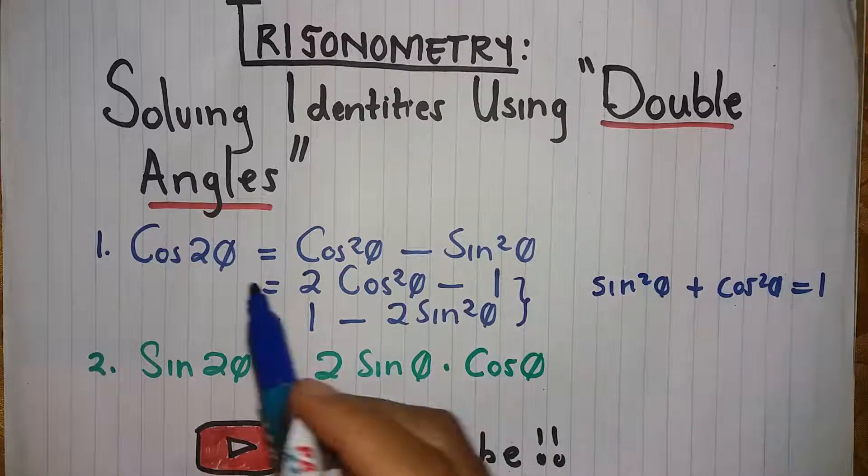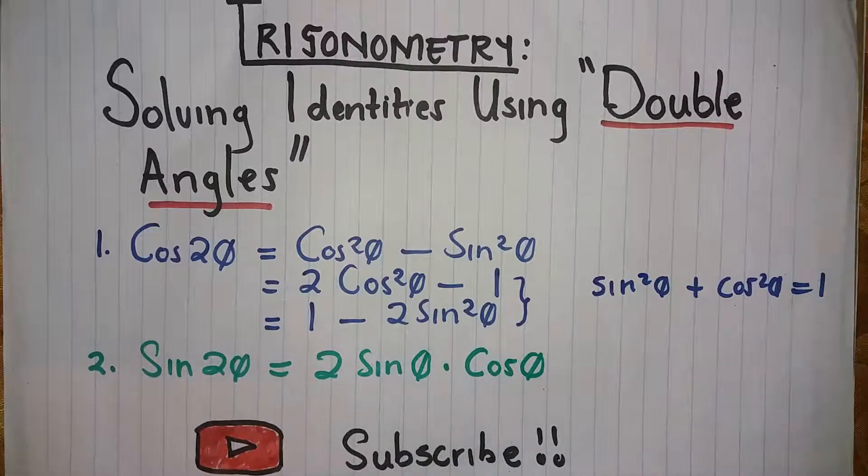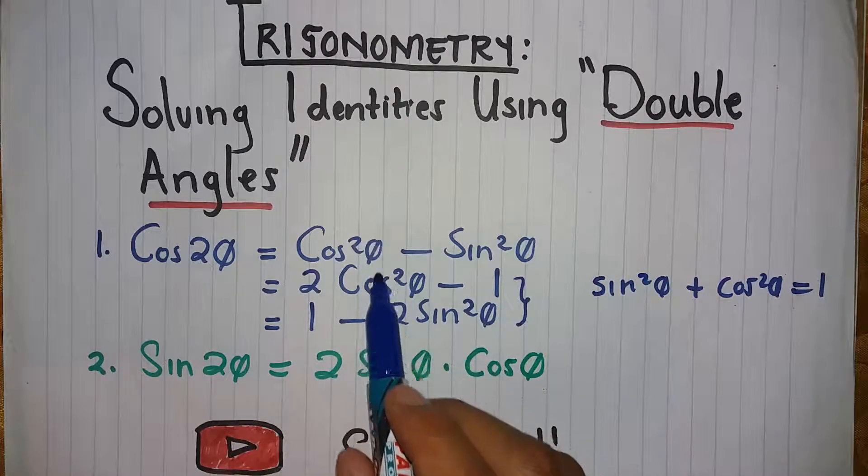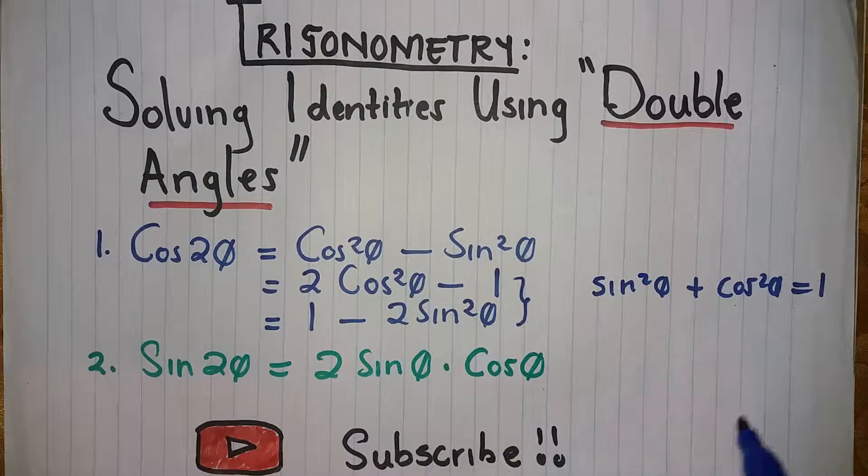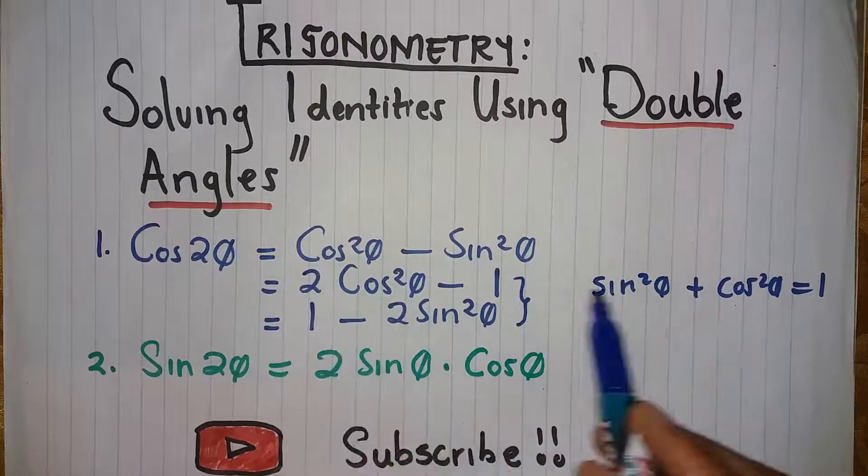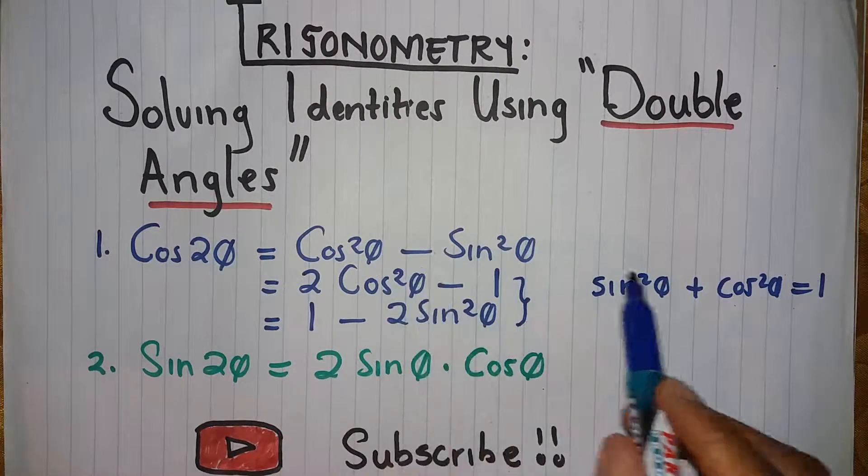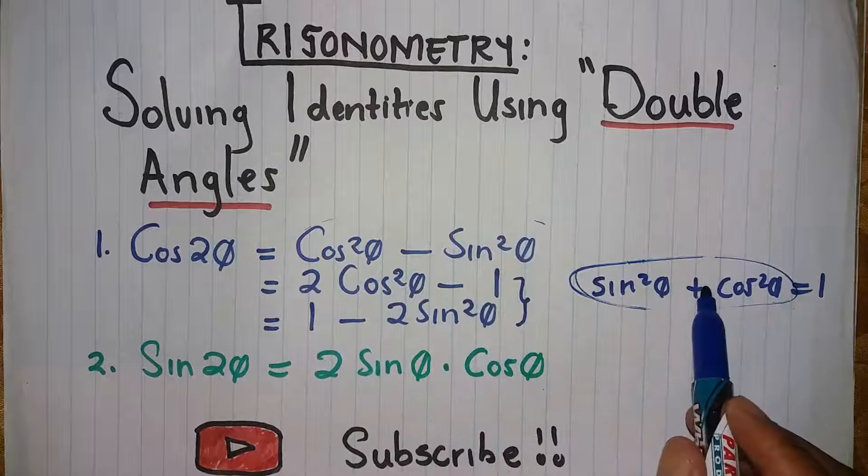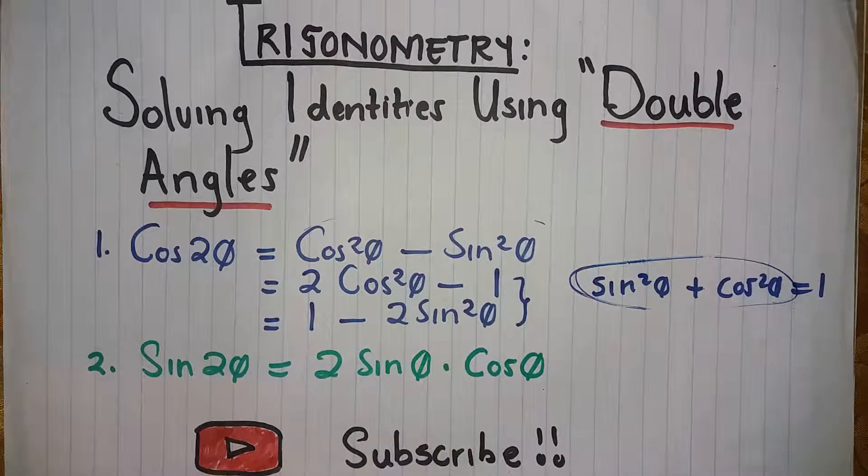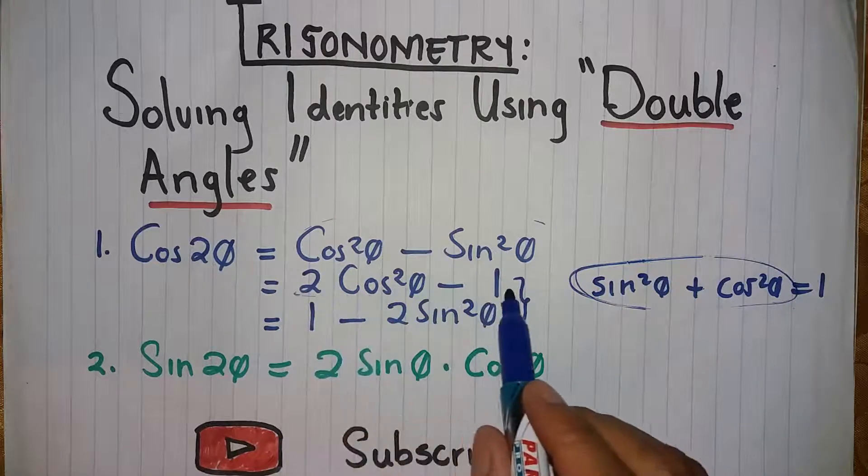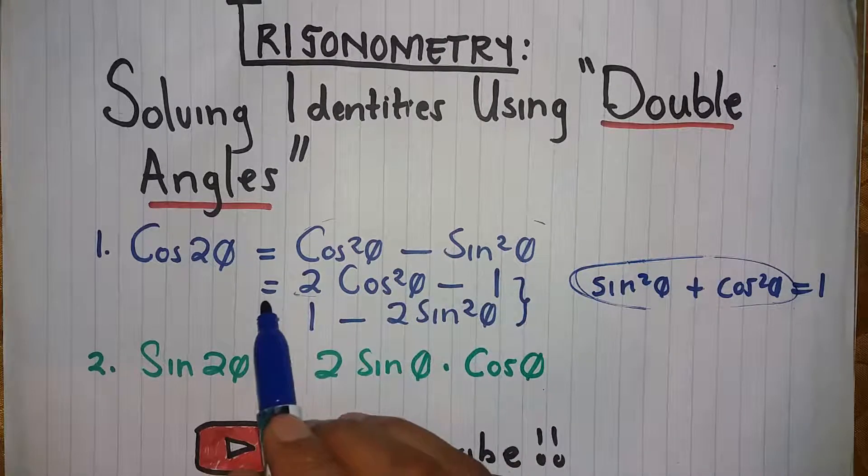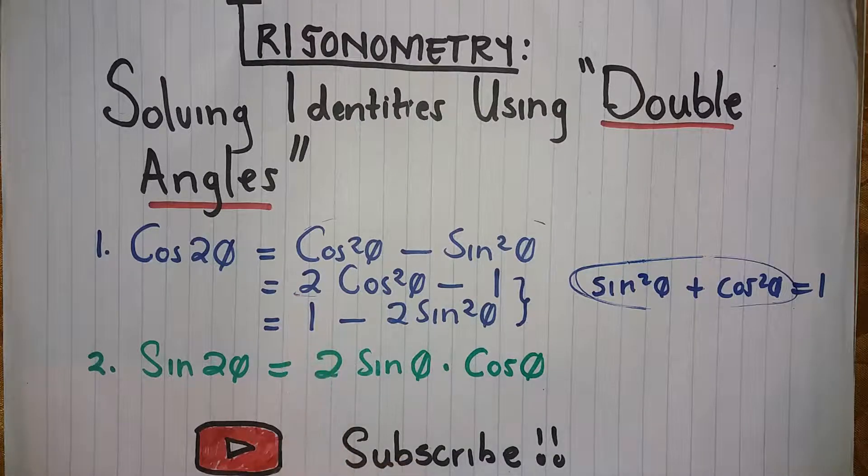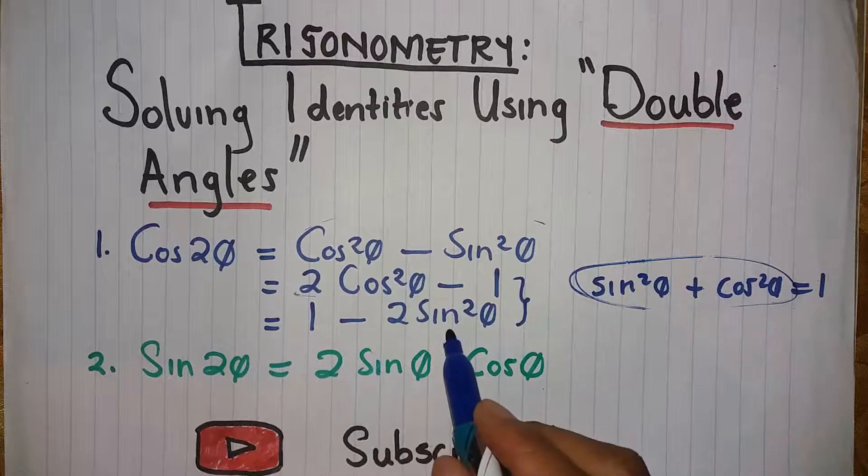So, cos 2 theta is equal to cos squared theta minus sine squared theta. You can see that the identity is equal to this. The only difference is just the plus and the minus. So you have the identity 2 cos squared theta minus 1 and 1 minus 2 sine squared theta.